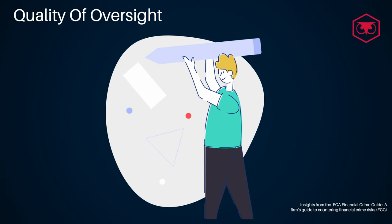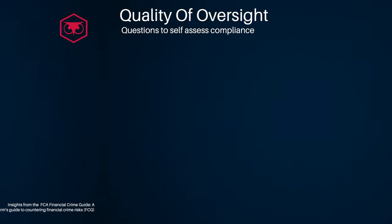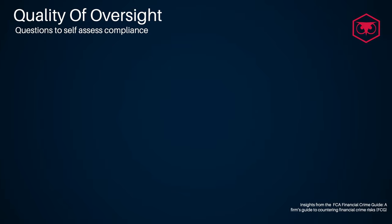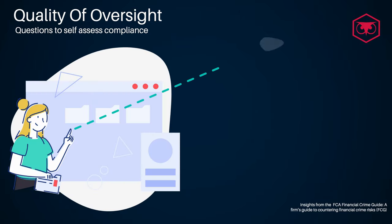Quality of oversight. The financial crime related activities put in place by a firm in order to mitigate and manage financial crime risks should be subject to challenge. This process would ensure that policies and procedures are correctly followed and that they are effectively working. Some questions to self-assess your compliance to this could be: Is there a process in place to demonstrate the review of financial crime systems and controls, which includes also the effectiveness of those?